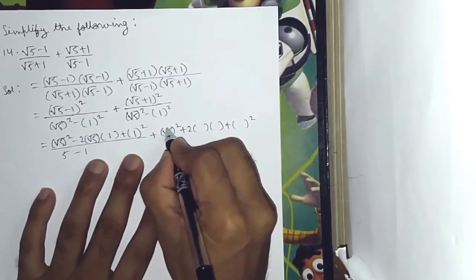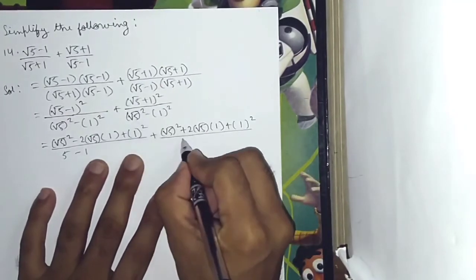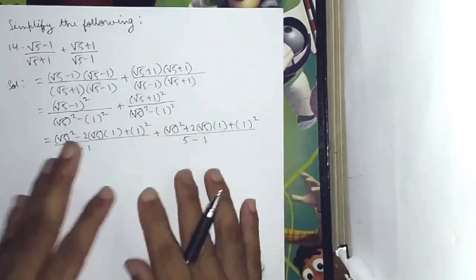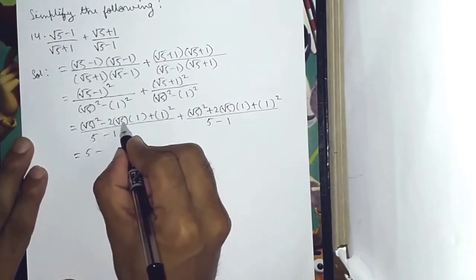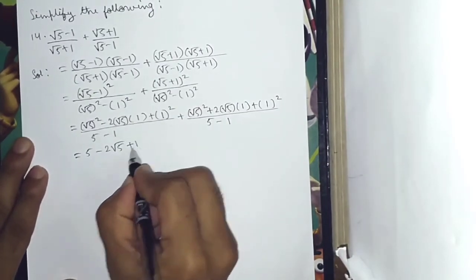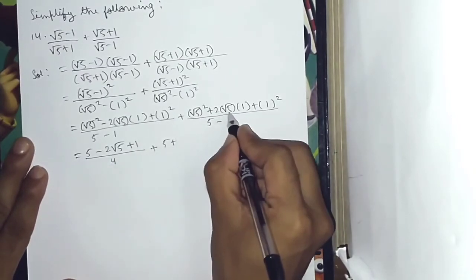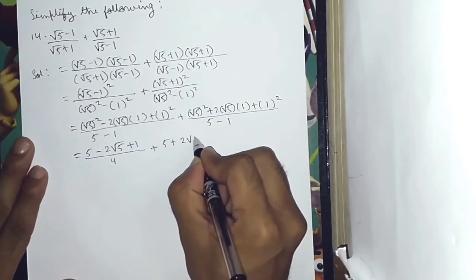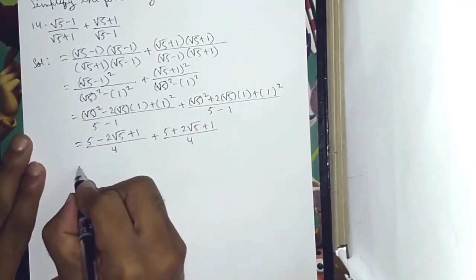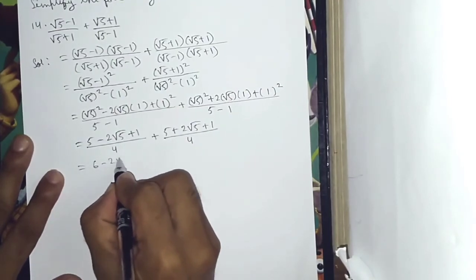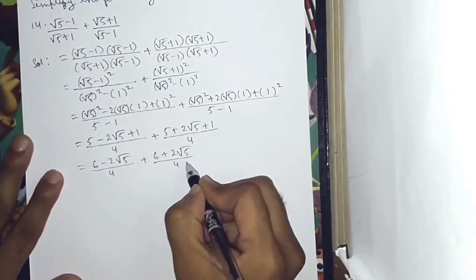And a plus b whole squared: a squared plus 2ab plus b squared gives root 5 squared plus 2 root 5 plus 1. So we get: 5 minus 2 root 5 plus 1, that is 6 minus 2 root 5, divided by 4, plus 5 plus 2 root 5 plus 1, that is 6 plus 2 root 5, divided by 4.